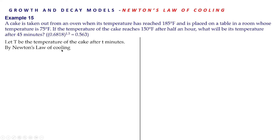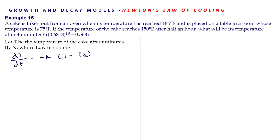Let T be the temperature of the cake after T minutes. The surrounding temperature A is 75°F. By Newton's law of cooling, dT/dt = −k(T − 75).